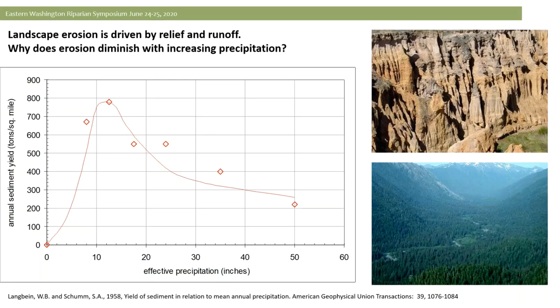What we see is that as precipitation goes up, erosion actually diminishes — because vegetation is coming in. I have a passion for looking at the history of science, particularly some geologic aspects. There's been interesting work in the last decade on how important plants were in landscape development. When plants showed up about 385 million years ago, particularly trees, it had a pronounced effect on fluvial geomorphology and the geologic record.